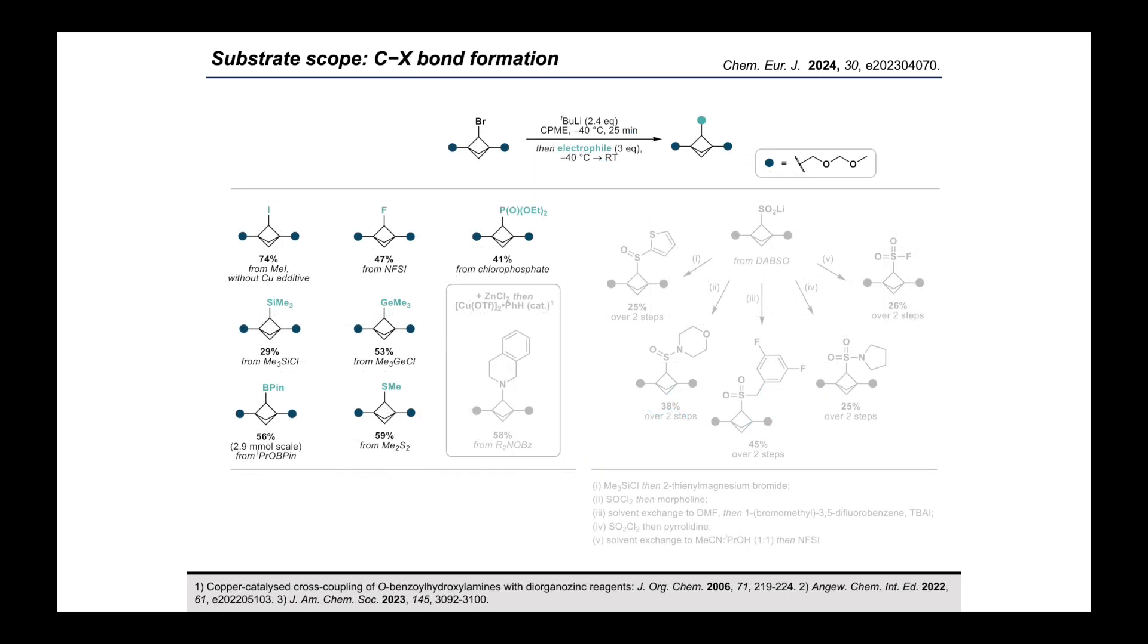In terms of heteroatom electrophiles, we were able to readily access the BCP fluoride, phosphonate, silane, germane, boron pinacol ester, and sulfide by treatment with the reagents shown.